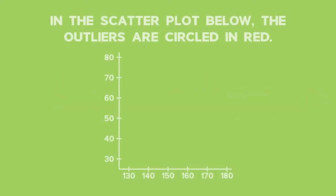For example, in the scatter plot below, the outliers are circled in red.